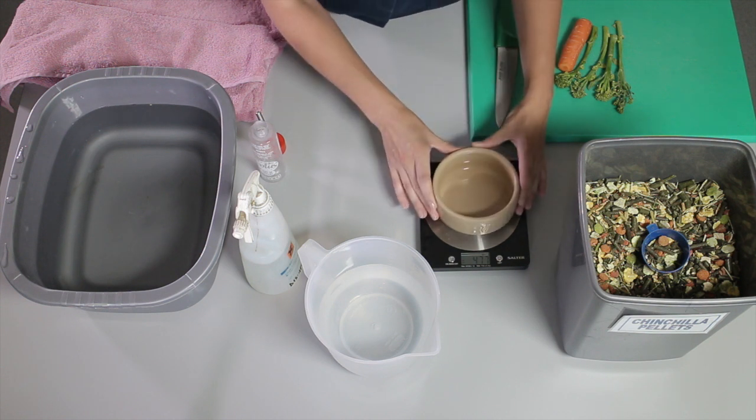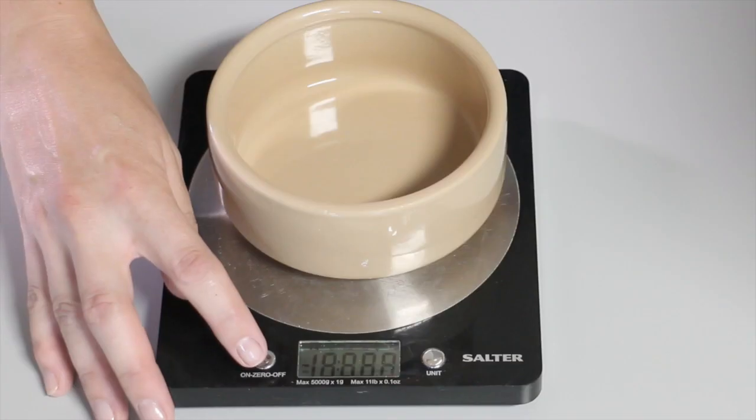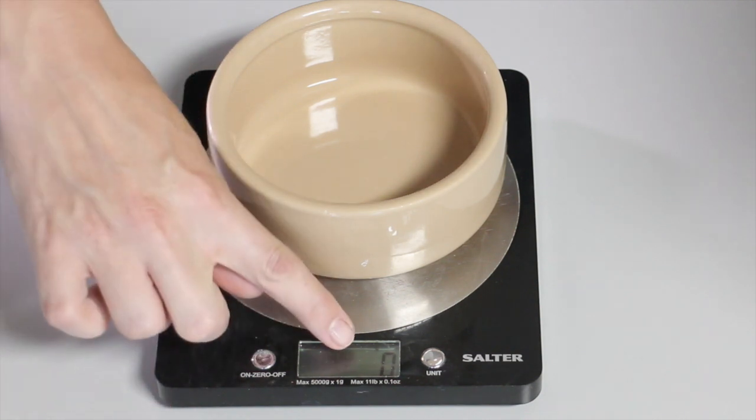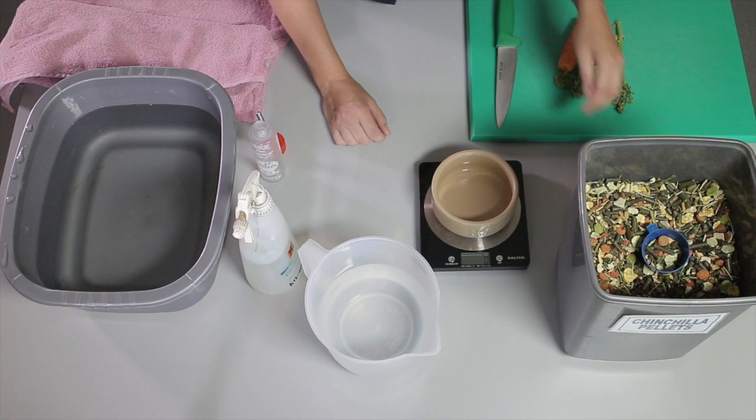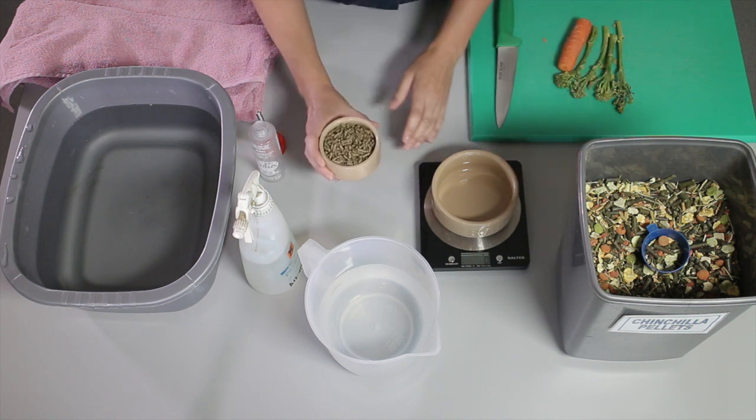I'm going to place this onto the scales. Then make sure the reading is at zero so that I'm not weighing the bowl itself. Now we've got two types of food that we could feed to chinchillas.